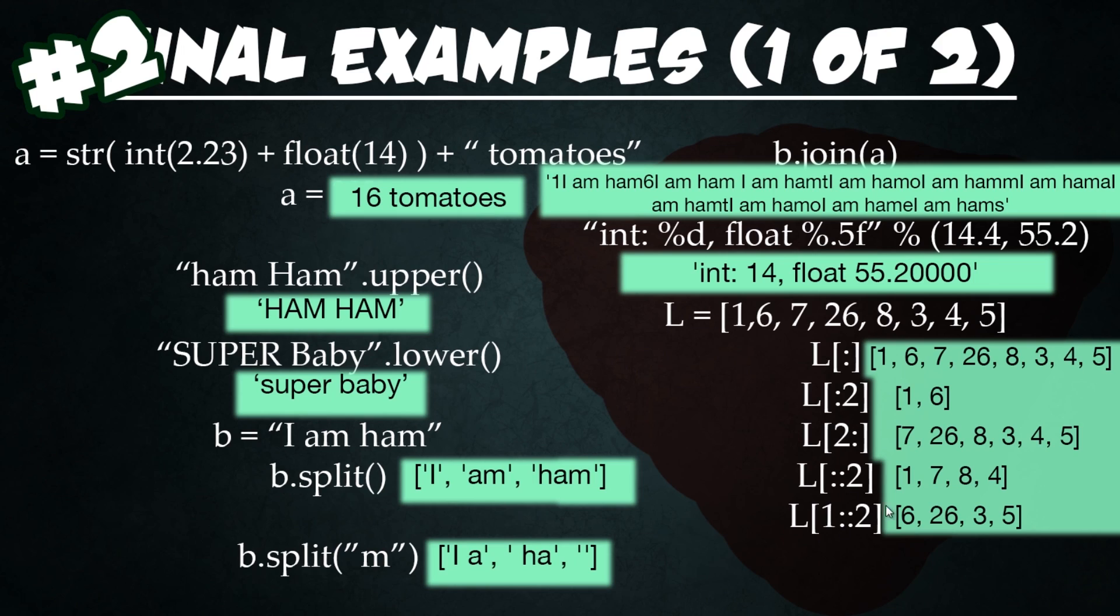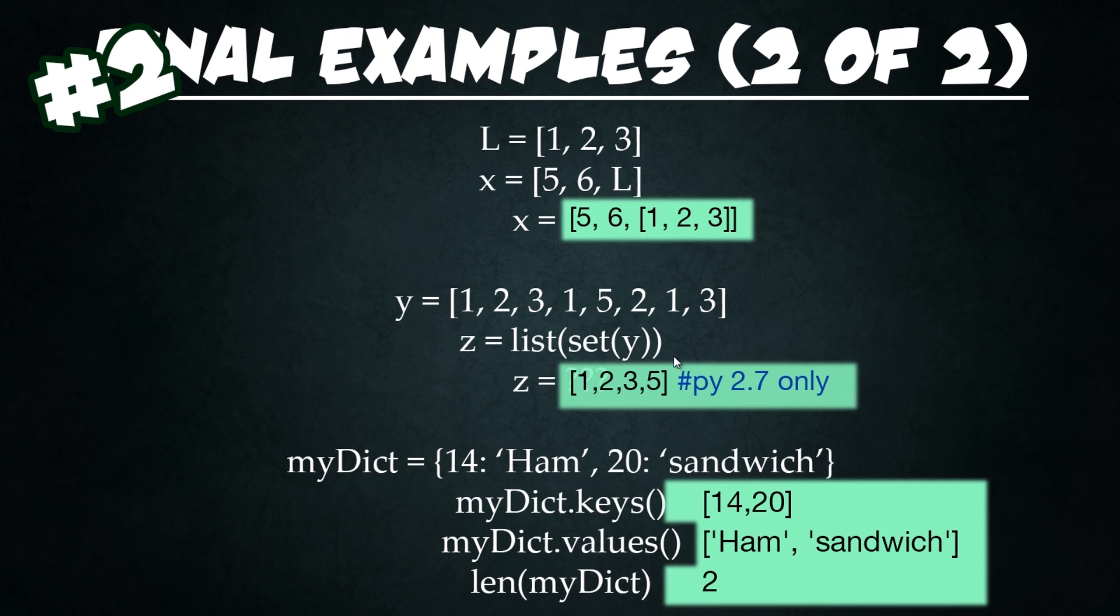And then for this last element, we're saying start with the element index of one. So up above, we were grabbing the even indices. Now we're going to be grabbing it by the odd indices by offsetting it by this one. And so we get six and then 26, three, and then five.